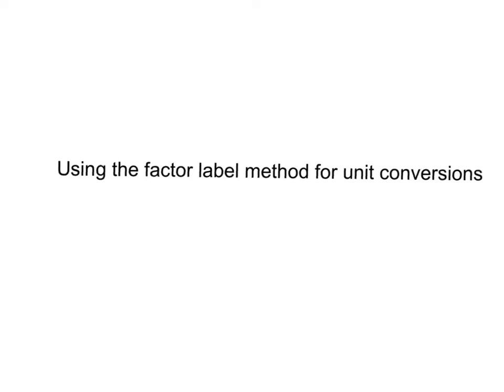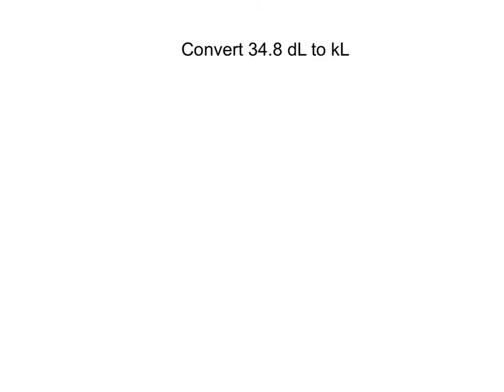Okay, here's a quick screencast to go over the factor-label method as it relates to unit conversions. We're going to start with a simple example that involves a metric unit to metric unit conversion. If you look at this example, we're converting 34.8 deciliters into kiloliters.